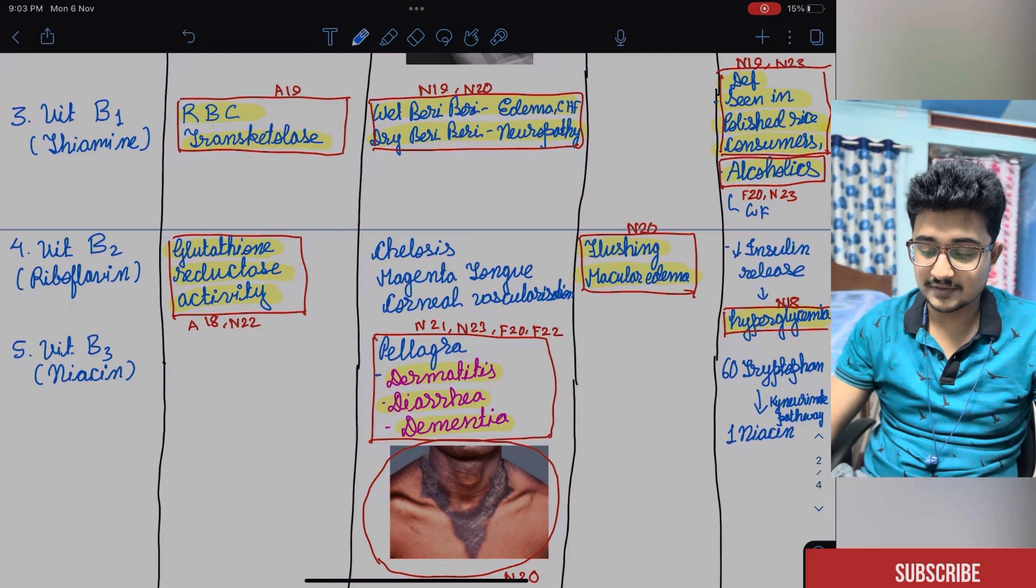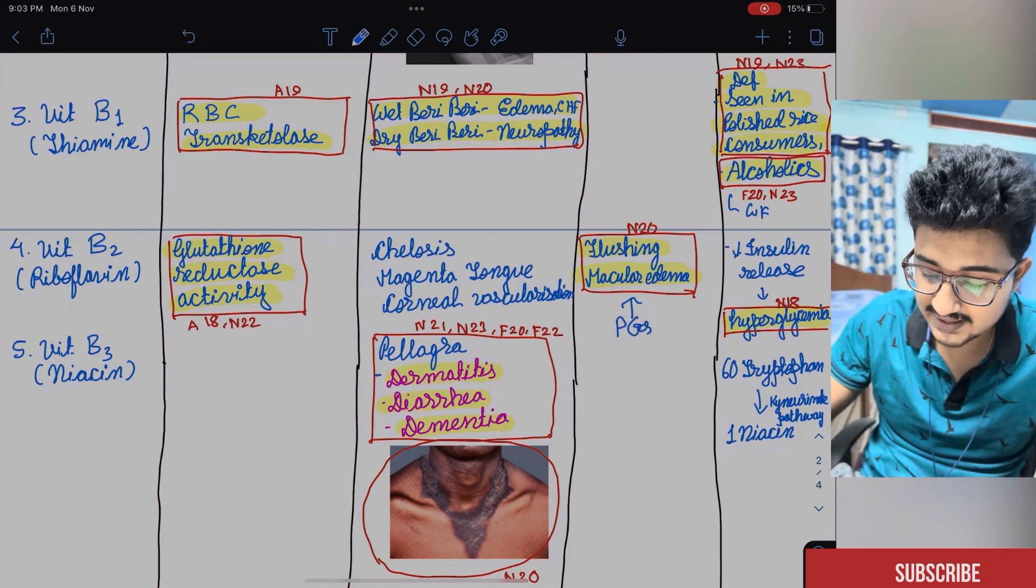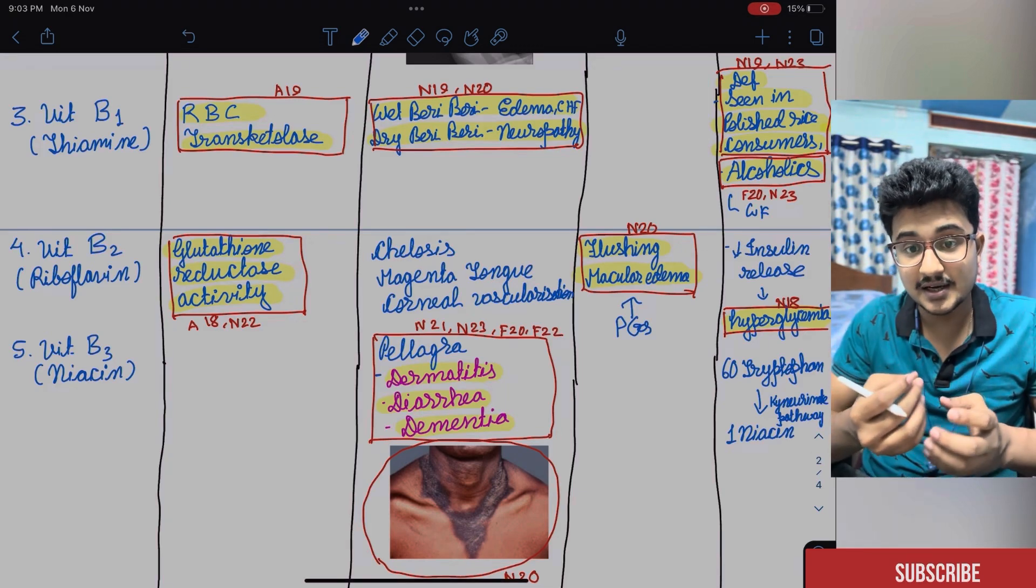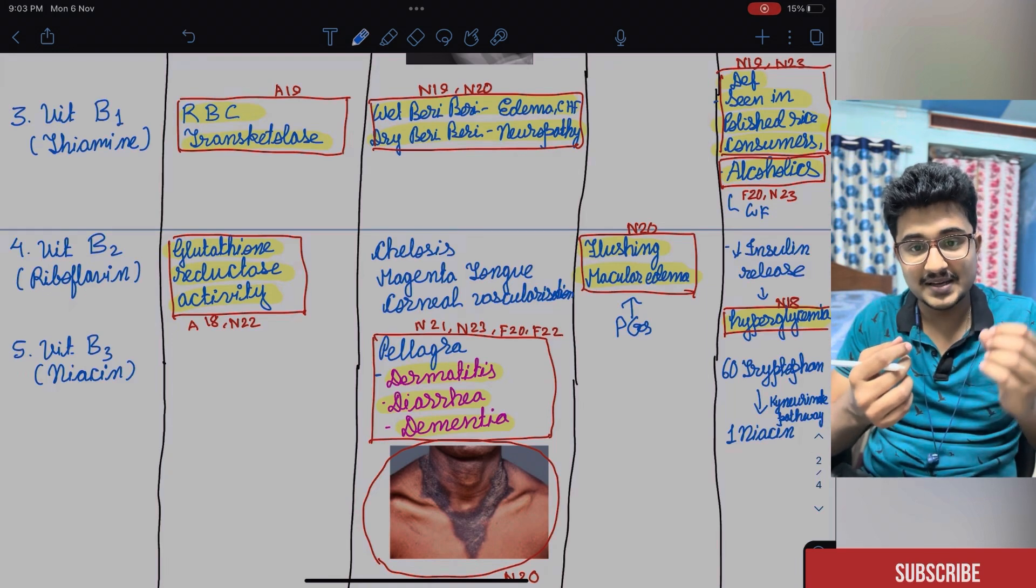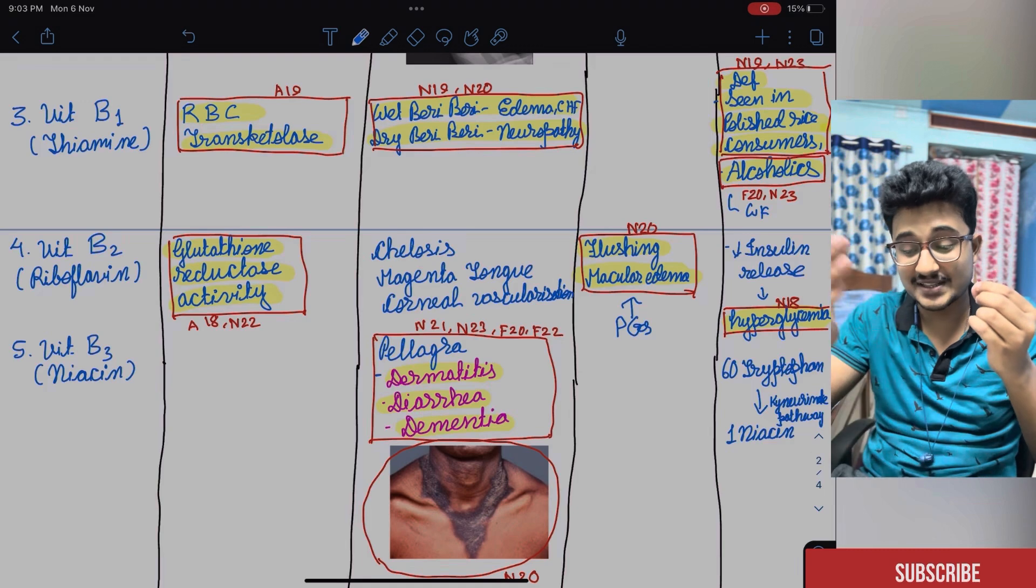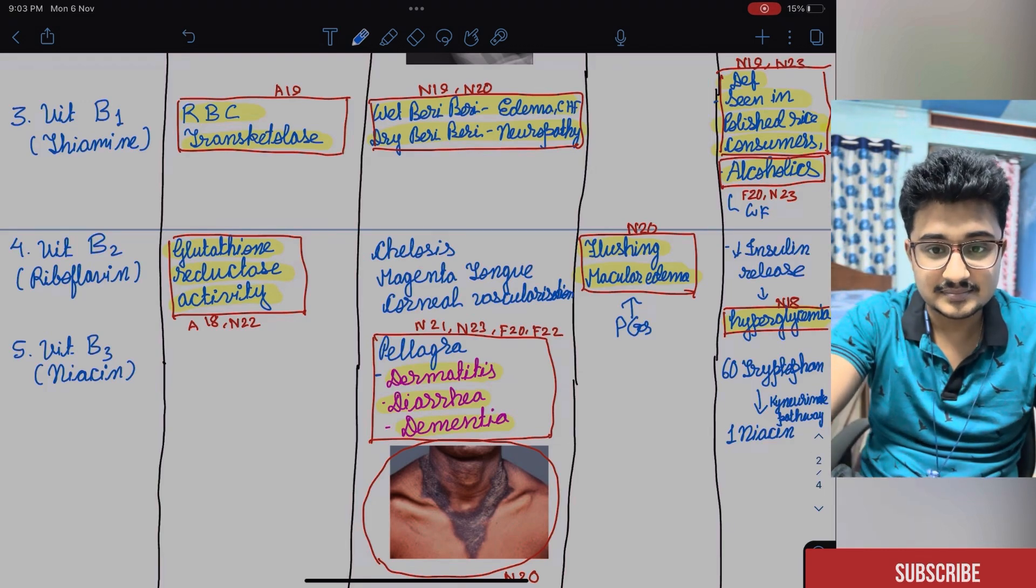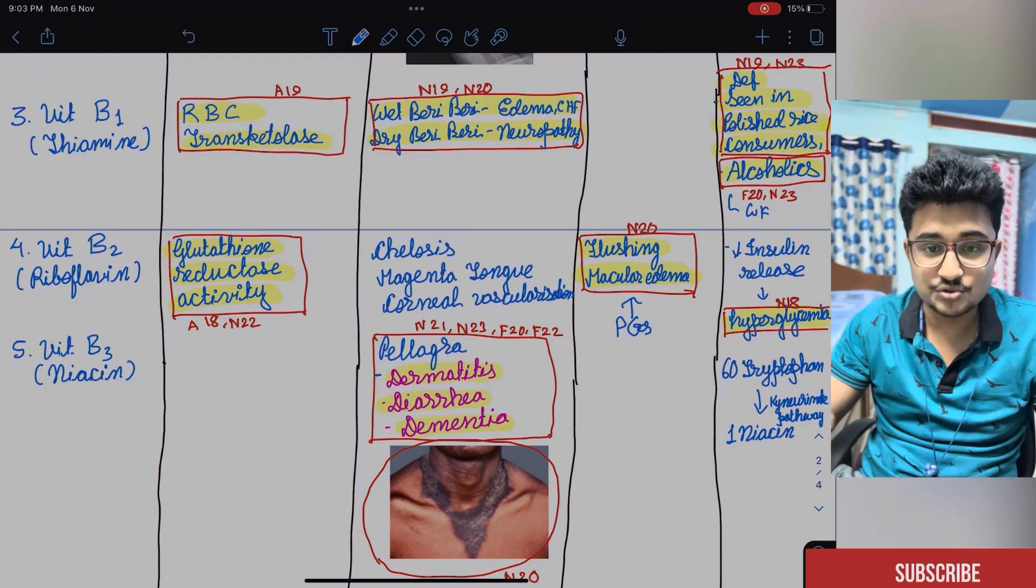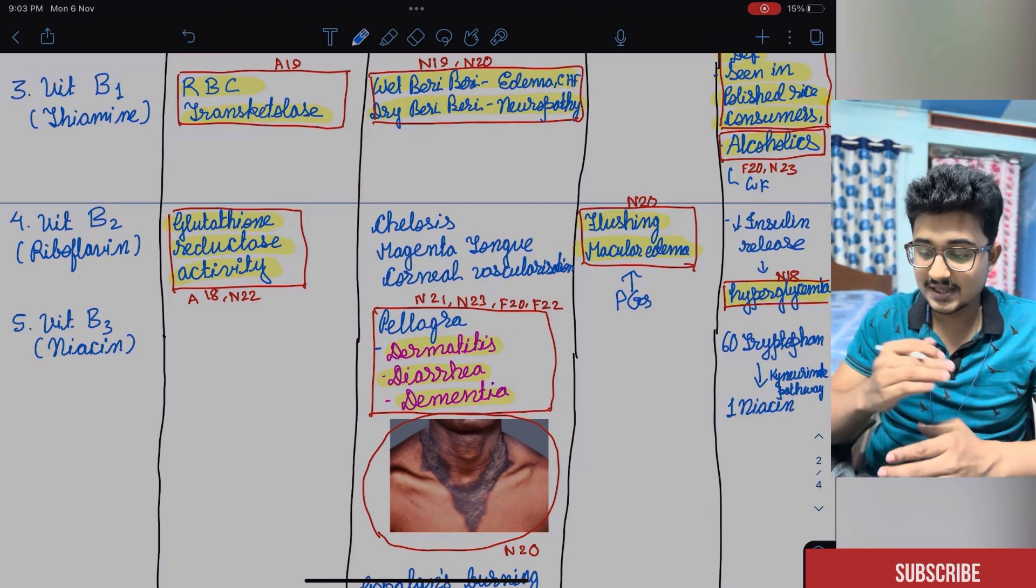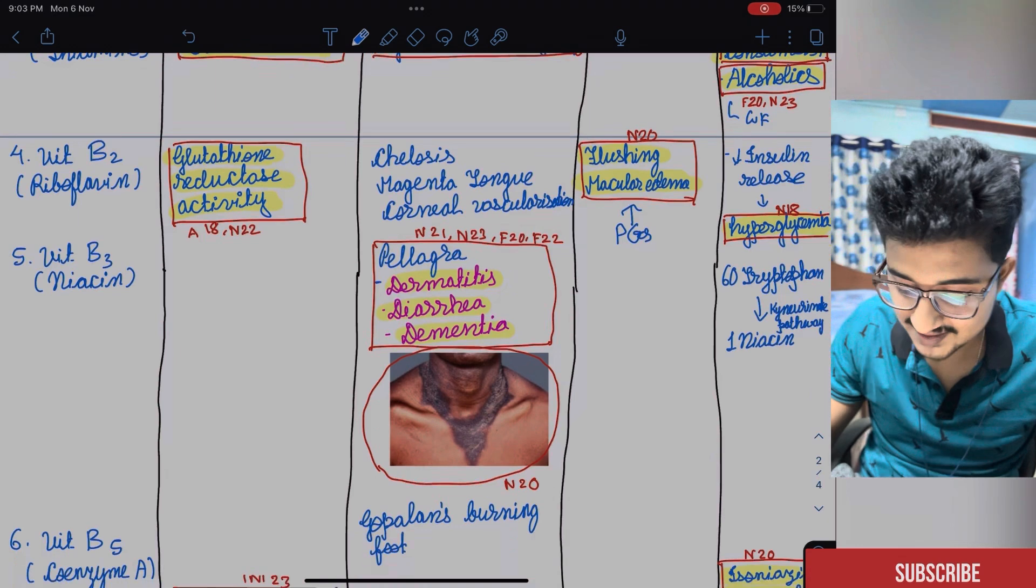And in excess, it can cause flushing and macular edema. Both of which are due to prostaglandins. Prostaglandin excess. Macular edema you can also see in cases when you use latanoprost or prostaglandin analogs in case of glaucoma. So it is a side effect. Like this you have to connect. You can understand.